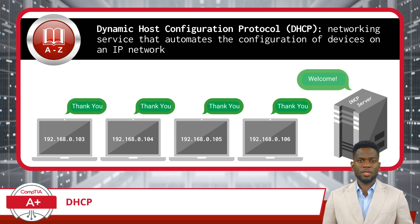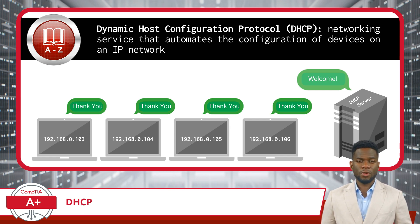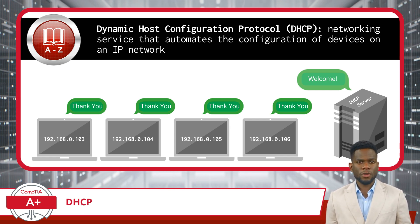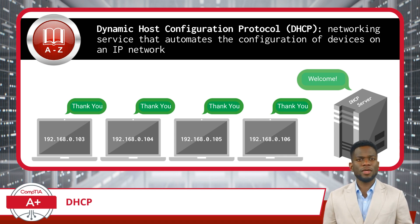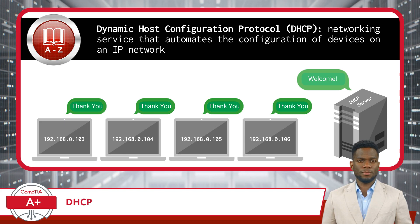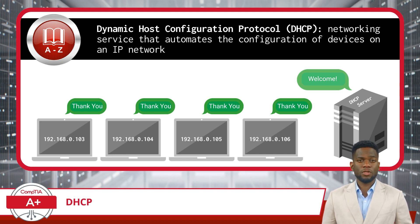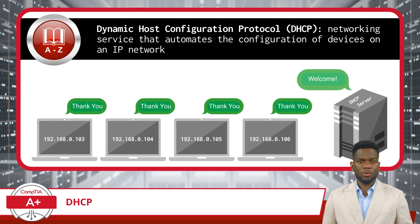To simplify things, imagine every device connected to a network is like a house in a vast neighborhood. Just like every house needs a unique address to receive mail, every device needs a unique identifier, known as an IP address, to send and receive data on a network. Here's where DHCP steps in. It acts like the neighborhood's post office, dynamically assigning IP addresses to devices as they join the network, ensuring each one has a unique address and can communicate efficiently.